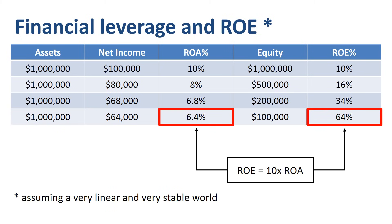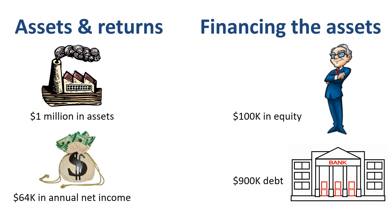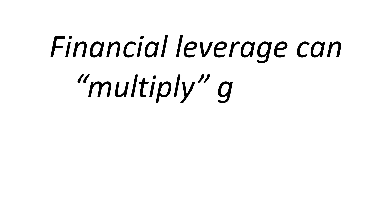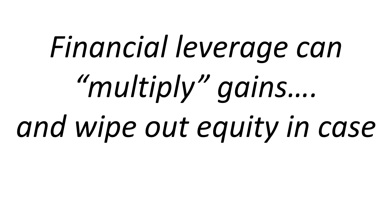Why do we say ROE COULD skyrocket? Real life can be far more volatile than a clean example on paper. What if the $64,000 net income turns into an unexpected loss of $200,000? In a high financial leverage situation, this completely wipes out the existing equity. Either the shareholder urgently contributes more equity, or the bank will take possession of the assets which were the collateral for the loan. Financial leverage can multiply gains and wipe out equity in case of unexpected losses.